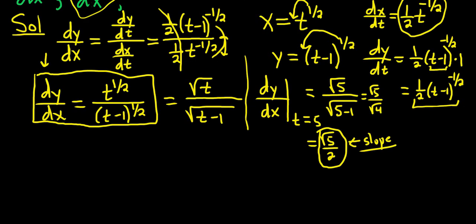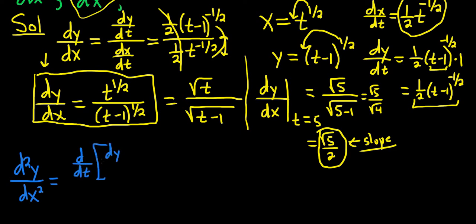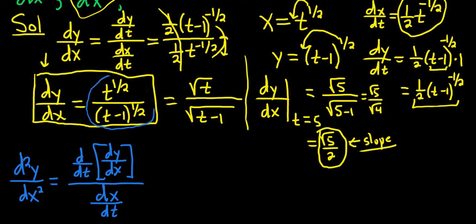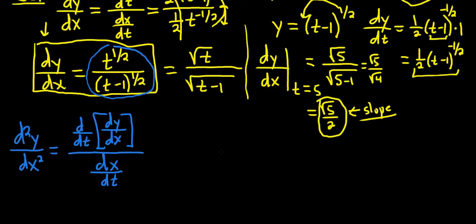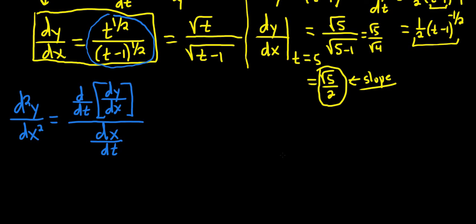Now let's find the second derivative. The formula for the second derivative is a little more challenging. In the numerator we have d/dt of dy/dx, and in the denominator we have dx/dt. To find the numerator, we have to take the derivative of dy/dx, and that requires the quotient rule. Let's go to the side and do that.